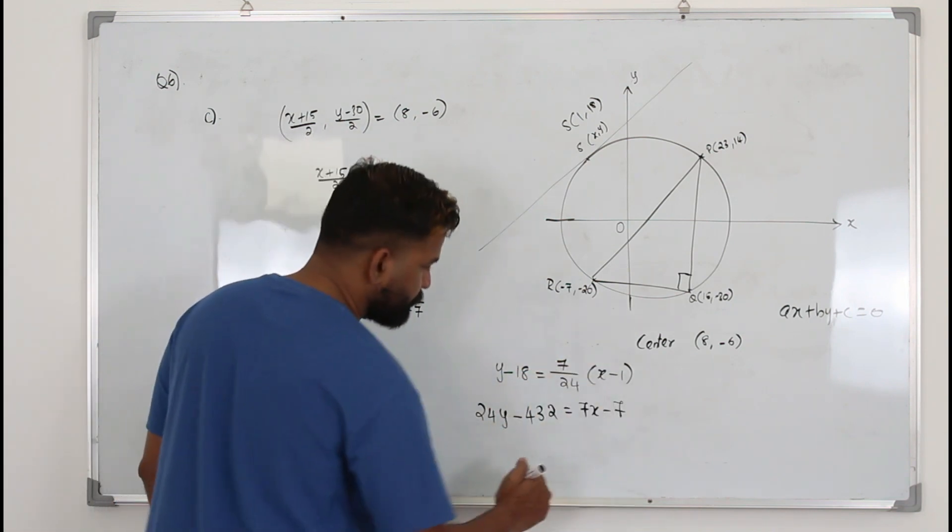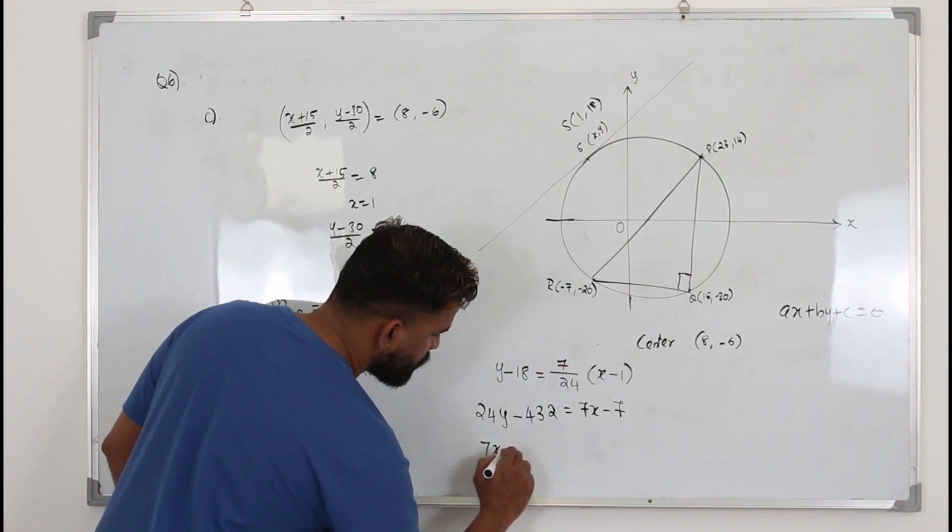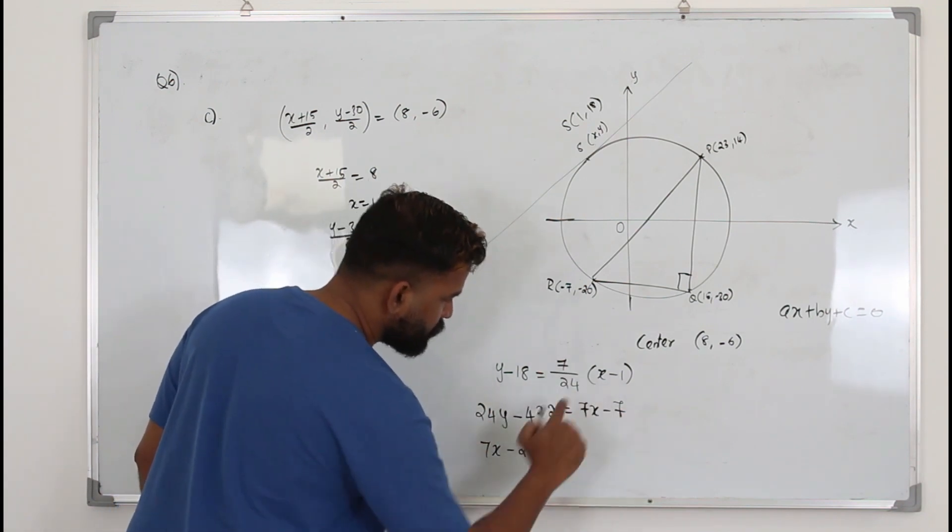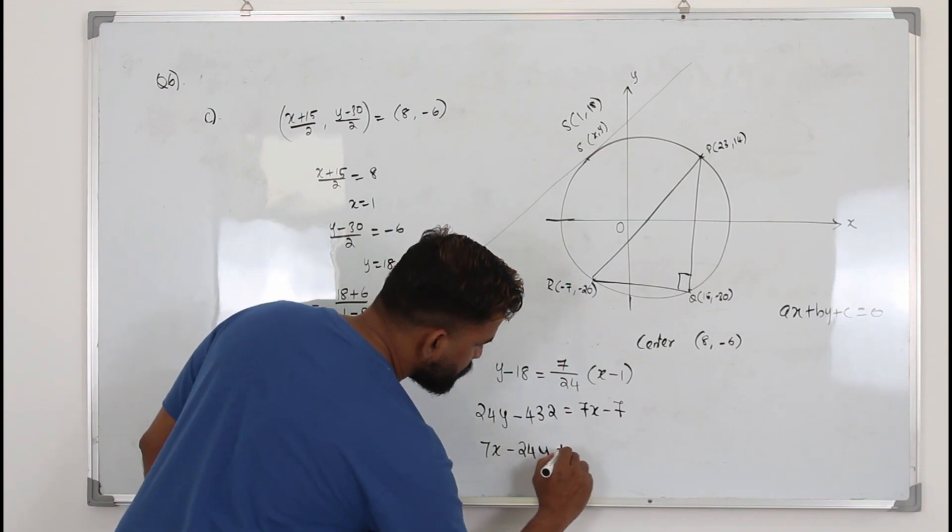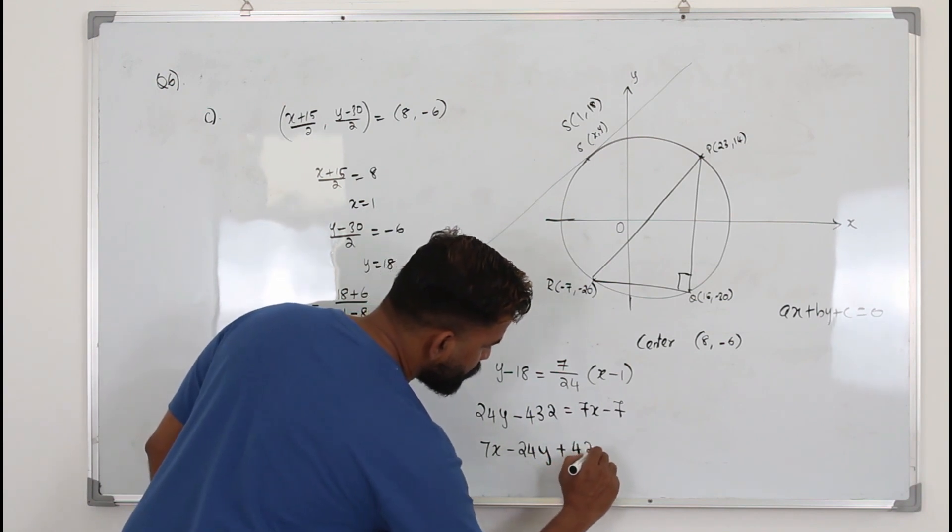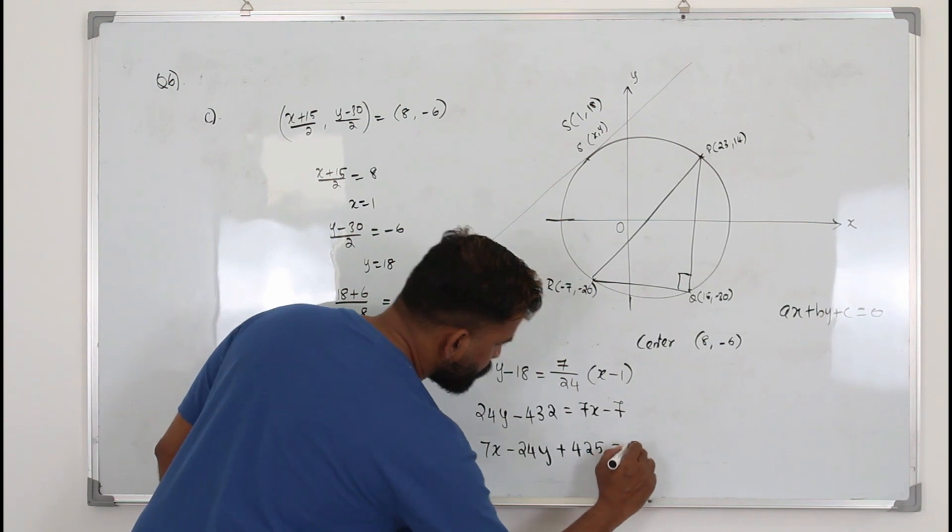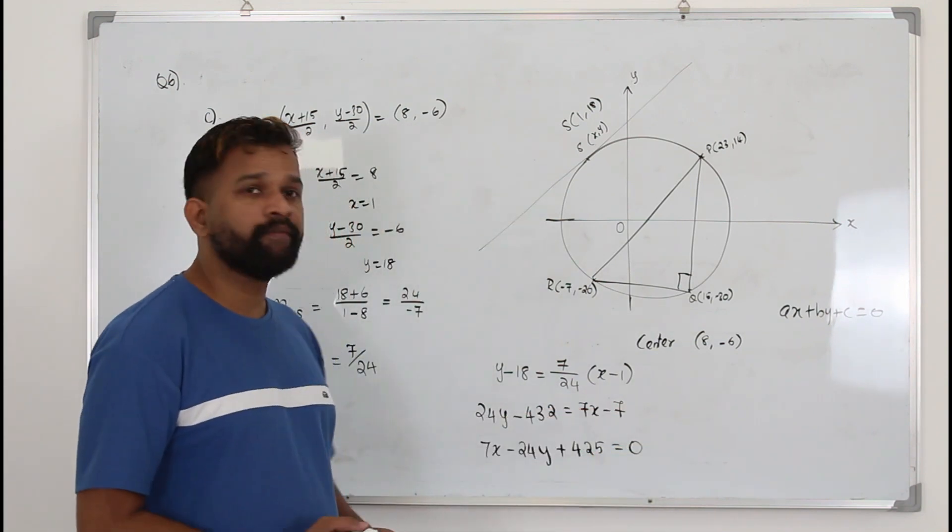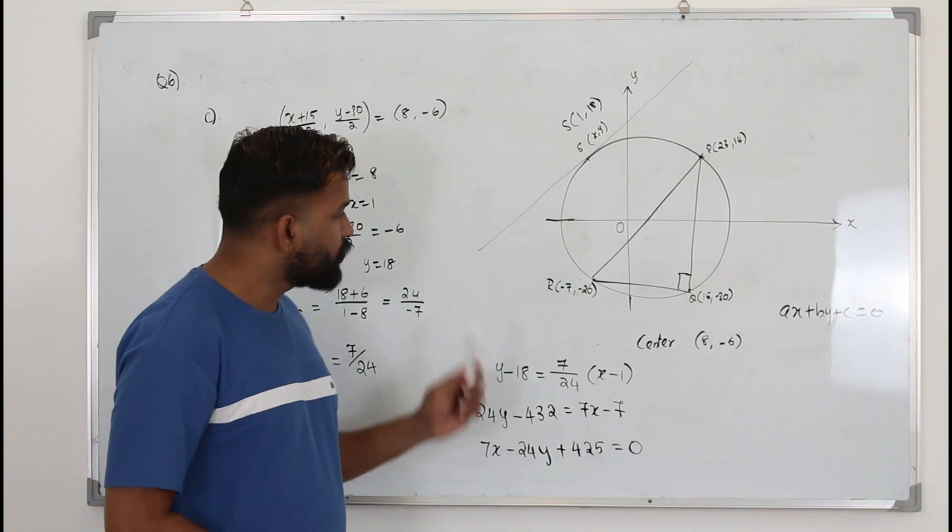Now put everything on one side. So 7x minus 24y, this becomes plus. So plus 425 equals 0. Because 432 minus 7 is 425. That's the equation of tangent.